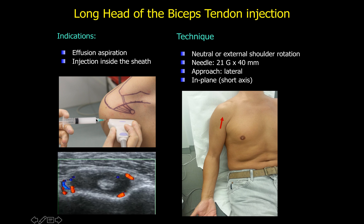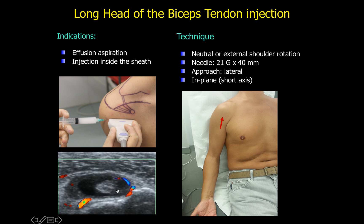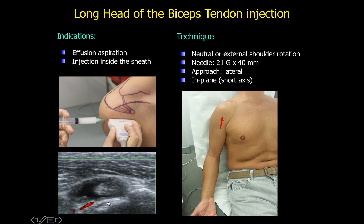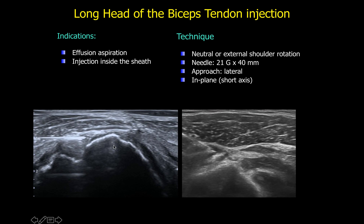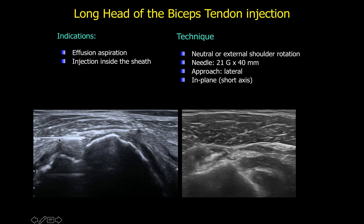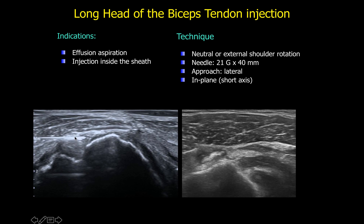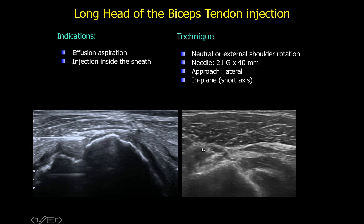The long head of the biceps tendon can also be infiltrated within its sheath or aspirated for effusion. The transducer is placed perpendicular to the arm in long-axis orientation, using an in-plane technique to visualize and control the needle as it advances over the biceps tendon, delivering the injection surrounding the tendon within its sheath.